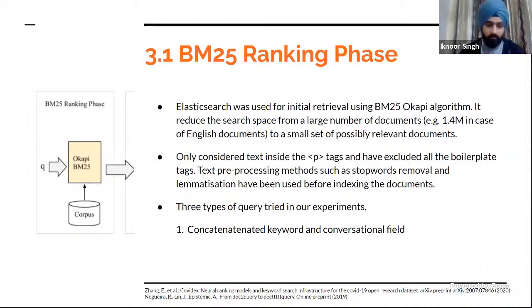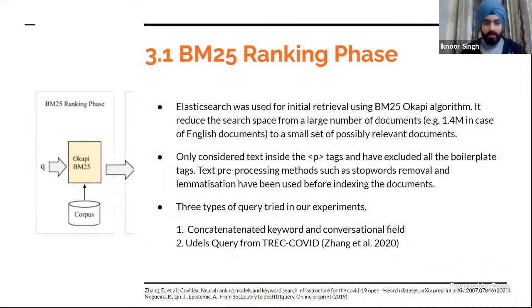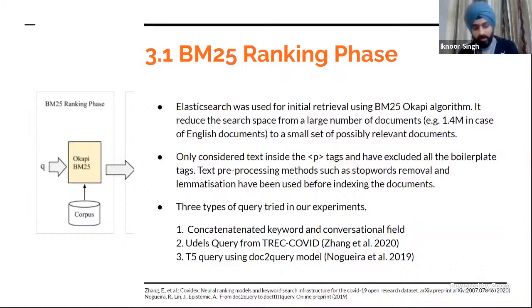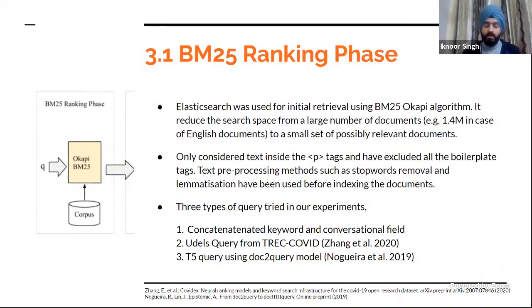Talking about the types of queries we used: first, a concatenated version of the keyword and conversational field. Second, the UDL query from the TREC COVID challenge — a method proposed by the University of Delaware participant that proved effective and gave slight performance increases. Third, a T5 query — where we generated queries from the keyword and conversational fields using a doc-to-query model, originally proposed to expand documents before indexing, but we used it to expand the query to check how well it performs when the rewritten query is concatenated and used for retrieval.